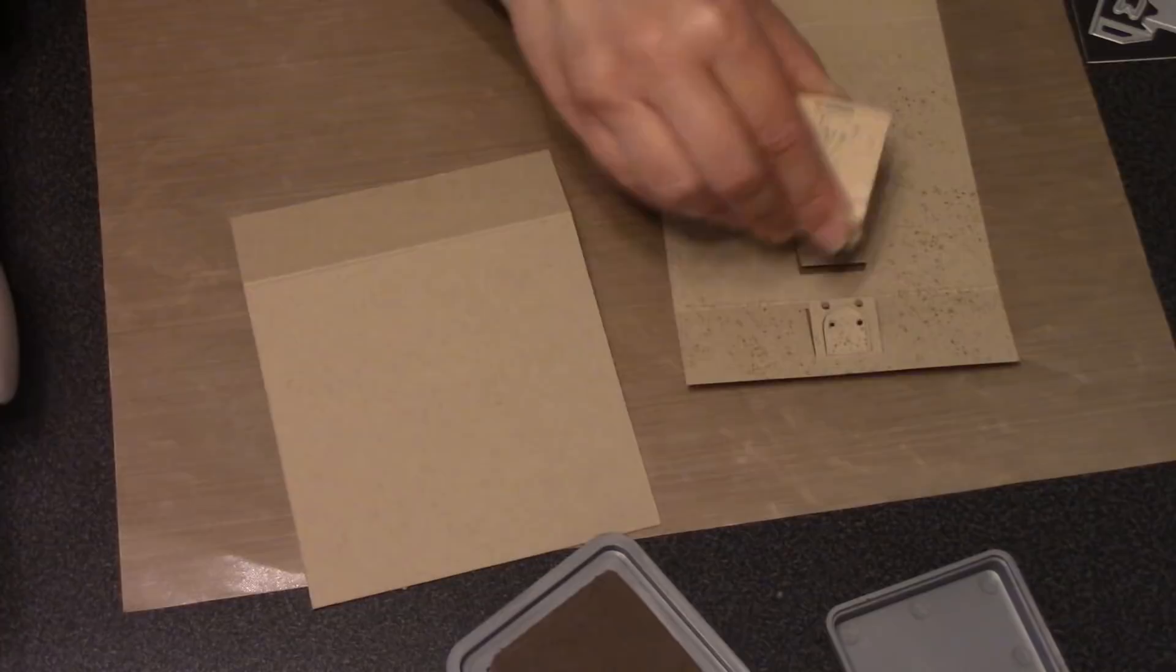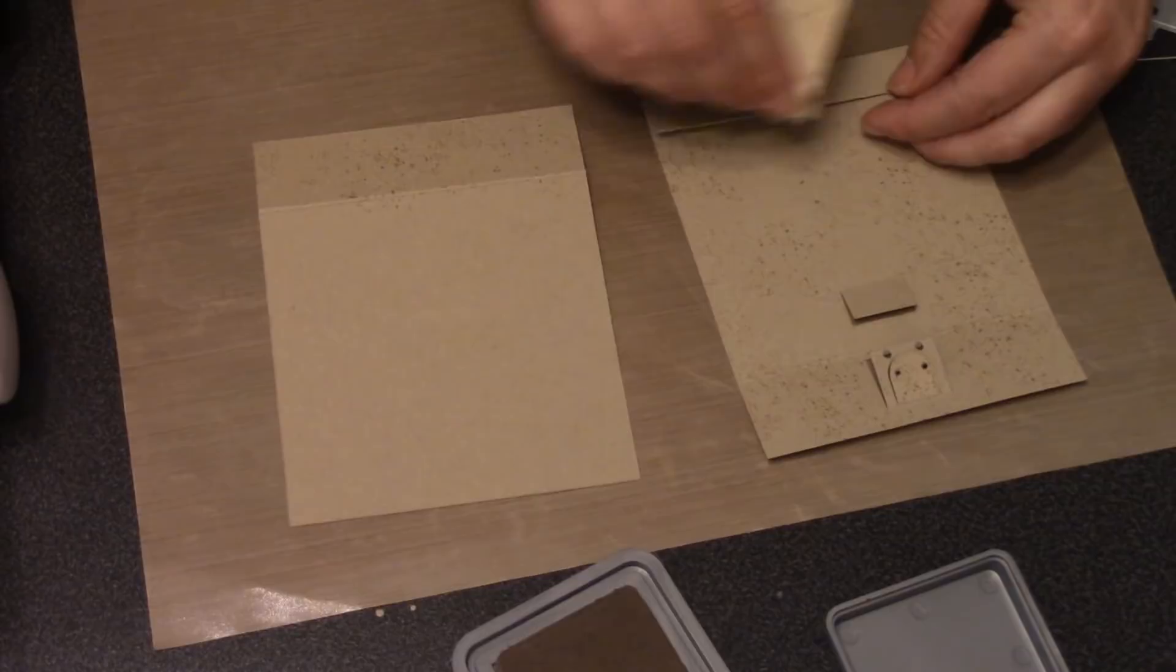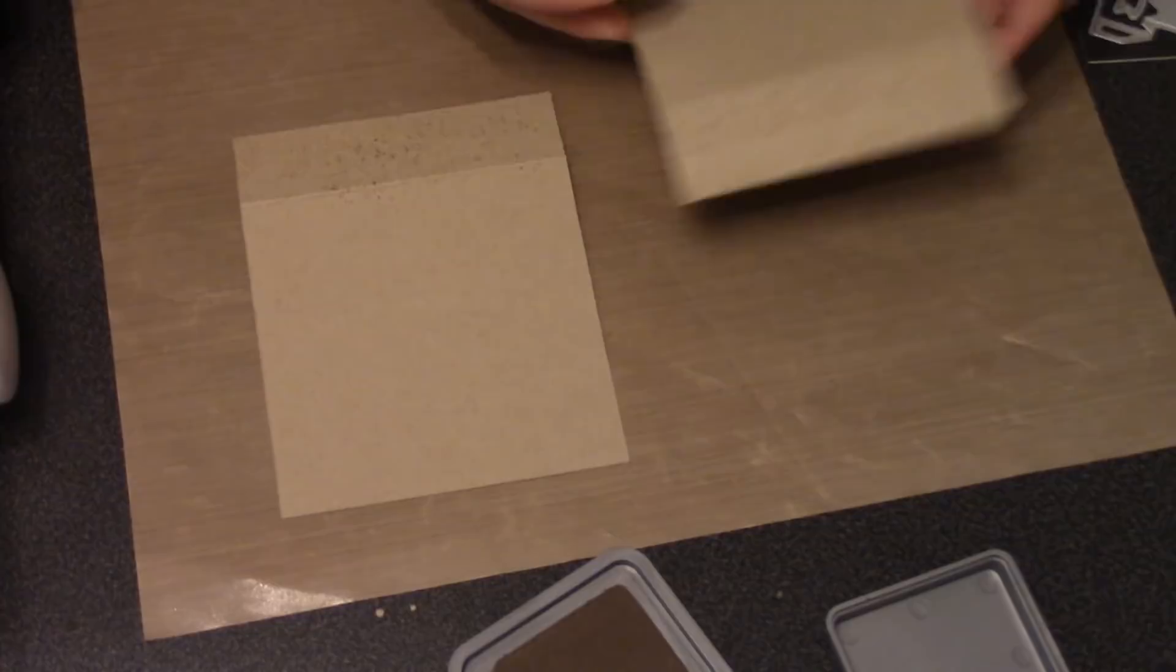I have an old Stampin' Up stamp with random dots that I'll use with brown ink to make sand texture all over my card. But you could also use just a coarse sponge with that ink, or a Brillo pad, or a piece of velcro—anything that'll create those small flecks.